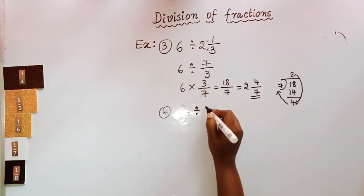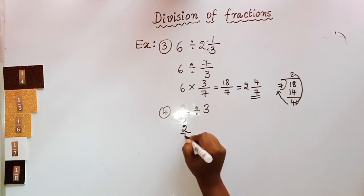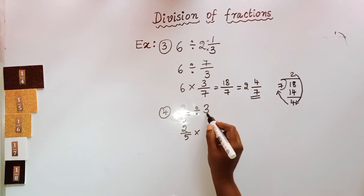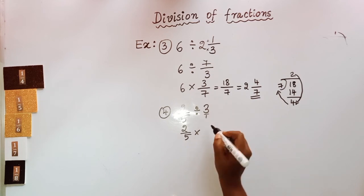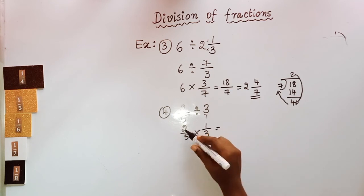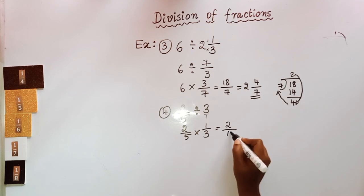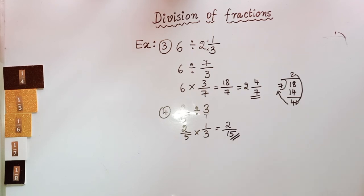Do the 4th example: 2/5 divided by 3. So 2/5 × reciprocal of 3. For 3 there is no denominator; if there is no denominator it means it is 3/1, and its reciprocal is 1/3. So 2/5 × 1/3 = 2/15.